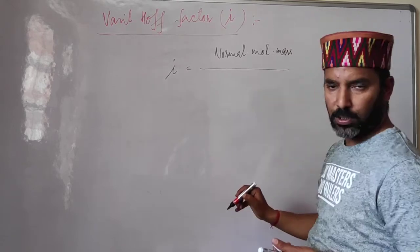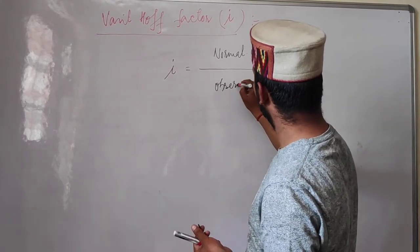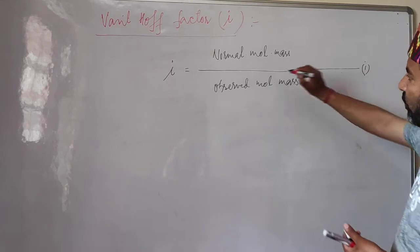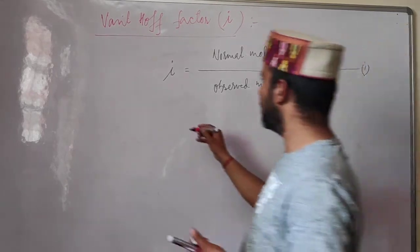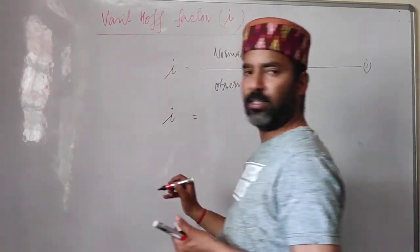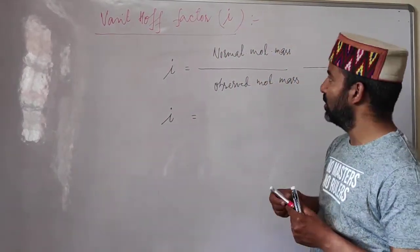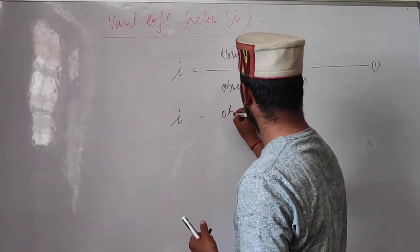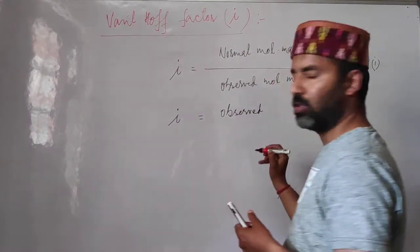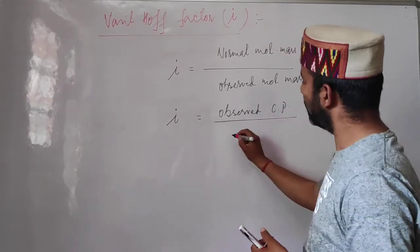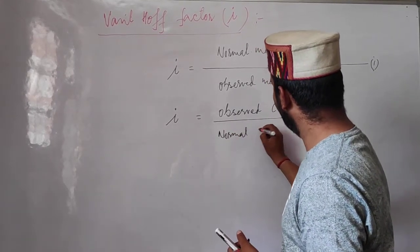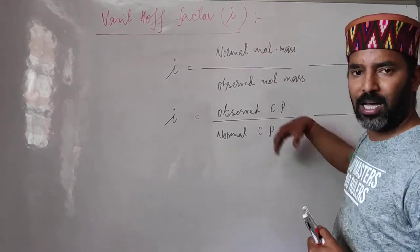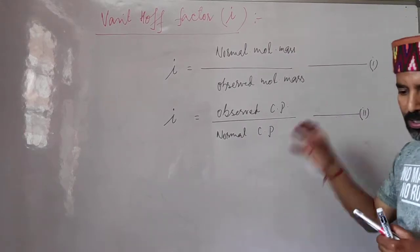The Van't Hoff factor is a correction factor used to express the extent of ionization, dissociation, or association of the solute particles. It is defined as the ratio of normal molar mass of the solute to the observed molar mass of the solute. Alternatively, since molar mass and colligative properties are inversely proportional, iota can also be defined as the ratio of observed colligative property to normal colligative property.